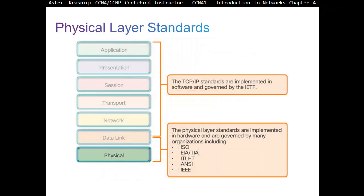Physical layer standards: the top six layers (layers 2 through 7) — TCP/IP standards are implemented in software and governed by the IETF. Layer 1, the physical layer and half of the data link layer, has standards implemented in hardware and governed by many organizations including ISO, EIA, TIA, ITU, ANSI, and IEEE.